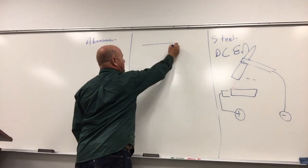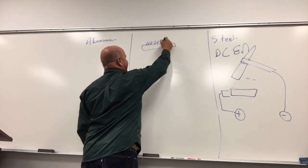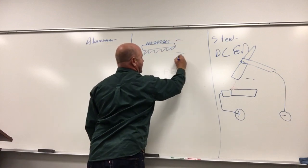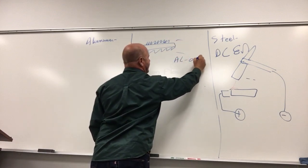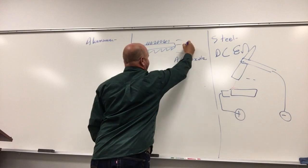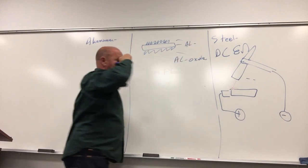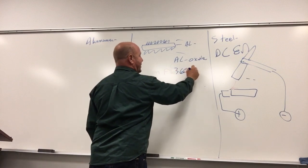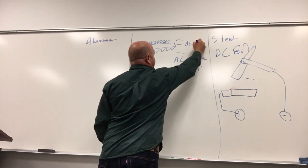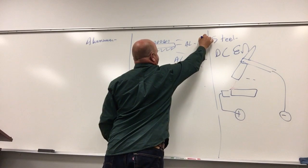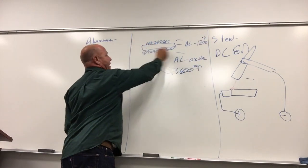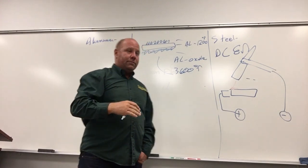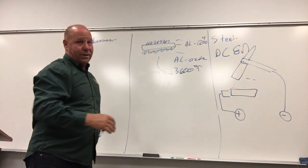The problem with aluminum is that it's a sandwich. On these edges here, you have aluminum oxide. In the center, you have aluminum. Aluminum oxide has a melting temperature of about 3,600 degrees Fahrenheit, whereas aluminum itself is 1,200 degrees Fahrenheit. That means this skin takes three times the heat to melt. So we don't want to melt it, we just want to get rid of it.